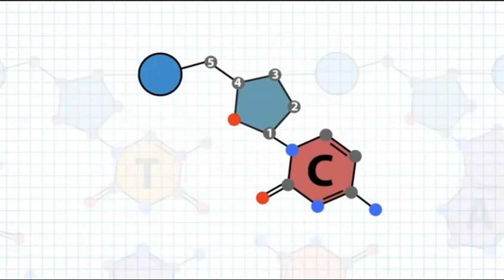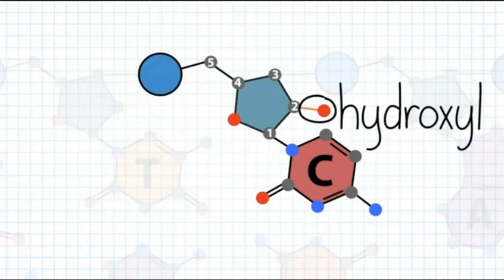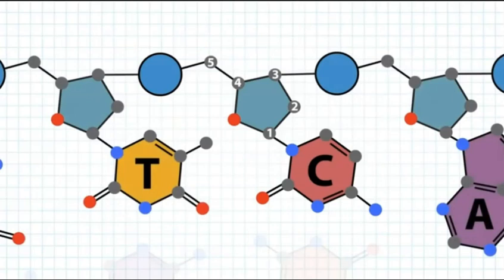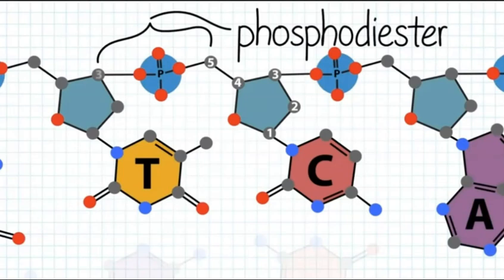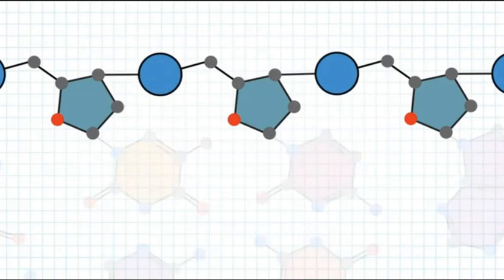The sugar is called deoxyribose because it is missing a hydroxyl group at the 2' carbon, which is present in ribose. Because of this, nucleotides in DNA — deoxyribonucleic acid — are called deoxynucleotides. Nucleotides attach to each other in the DNA strand by phosphodiester bonds; the phosphate group of one nucleotide binds to the 3' oxygen of the neighboring nucleotide. Thus, the sugars and phosphate groups make up the DNA backbone. The carbon numbering is key to describing the directionality of the DNA strand, 5' to 3'.